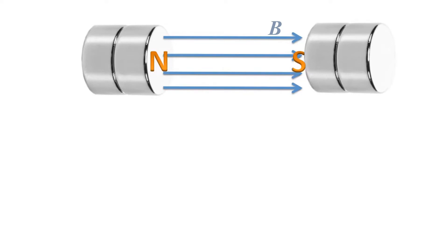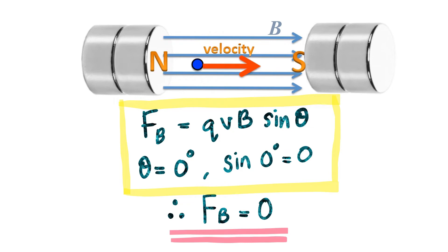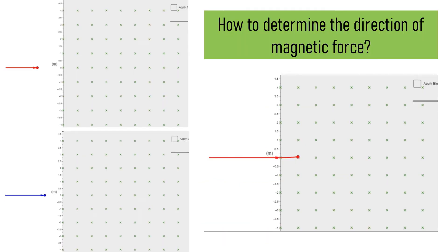However, imagine we have magnets arranged such that the charged particle is travelling along the same direction as the field. For this situation, the angle between V and B is 0 — the V and B vectors are parallel to each other. The angle is 0 and sin 0° = 0, so in this situation there will be no magnetic force. We already know that the charged particle will deflect in a circular path as it encounters a magnetic field.